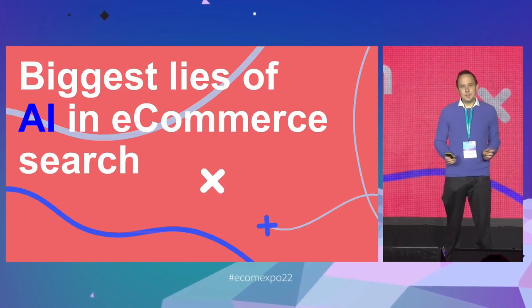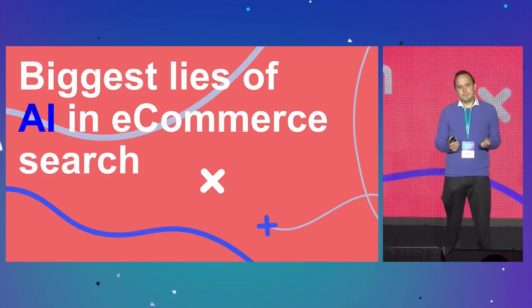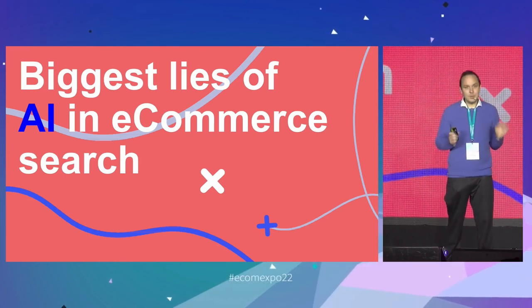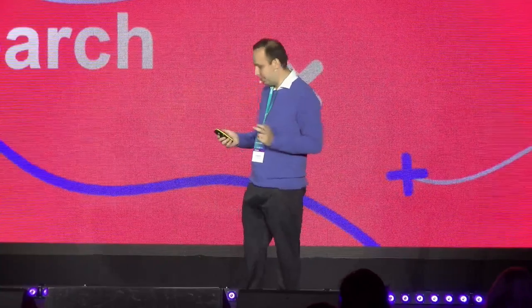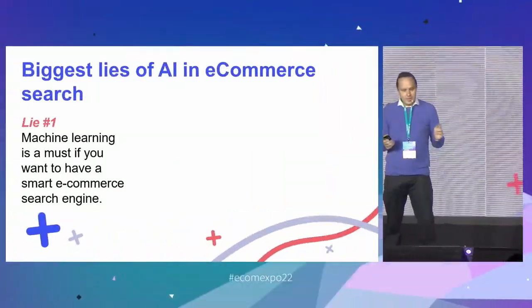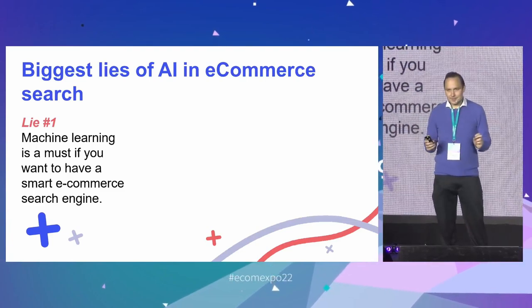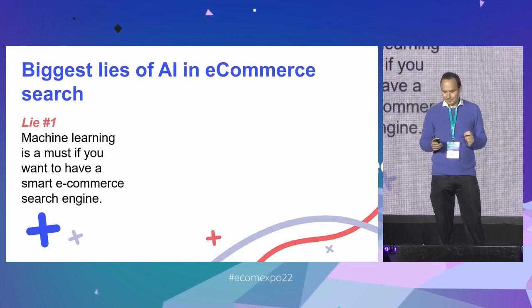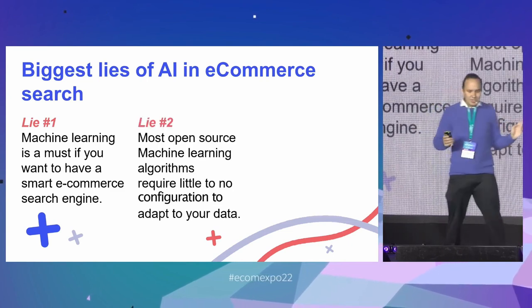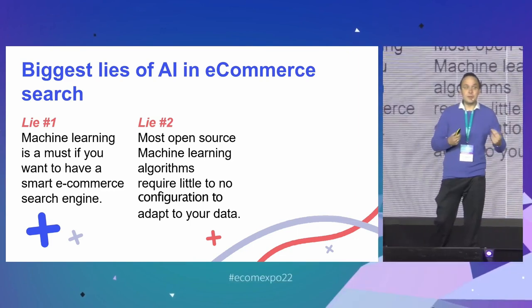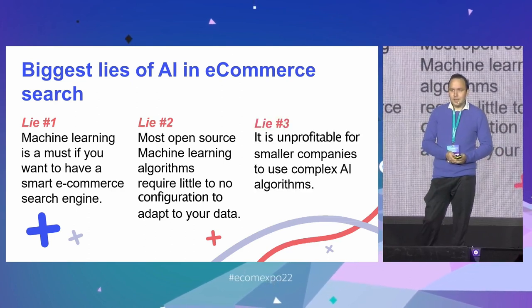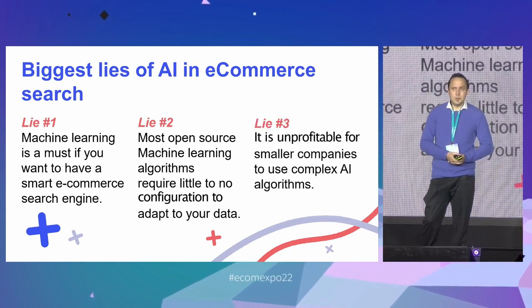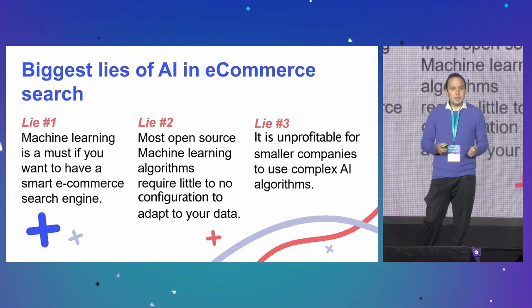For these reasons, my purpose today is to inspire you to be conscious when using AI in e-commerce search. To do that, I'm going to talk about three biggest lies of AI in e-commerce search. Lie number one: machine learning is a must if you want to have a great e-commerce search. Lie number two: machine learning algorithms that are open source require little to no configuration to adapt to your data. And lie number three: small companies cannot leverage the benefits of AI.